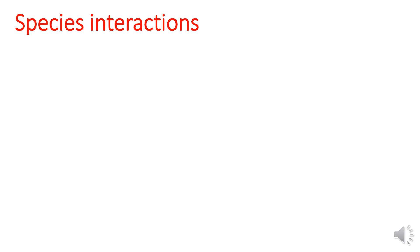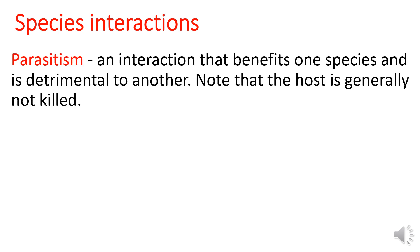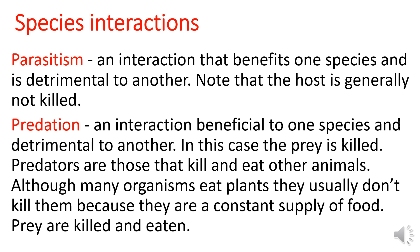Other species interactions are: parasitism — an interaction that benefits one species and is detrimental to another; note that the host is generally not killed. Predation — an interaction beneficial to one species and detrimental to another; in this case, the prey is killed. Predators are those that kill and eat other animals. Although many organisms eat plants, they usually don't kill them because plants are a constant supply of food. Prey are killed and eaten.